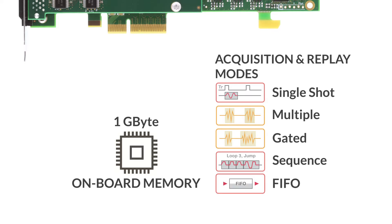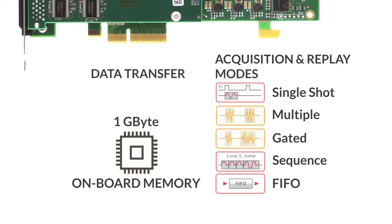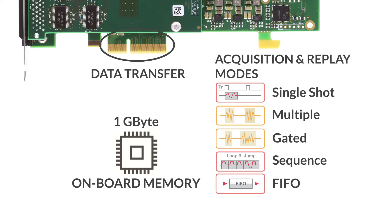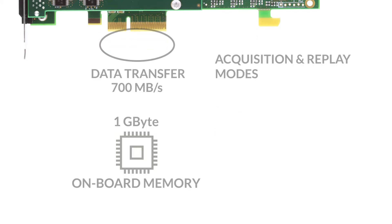Combined with data transfers over the PCIe bus at rates up to 700 MB per second, you'll find you can acquire or generate constantly changing digital patterns for extremely long periods of time.